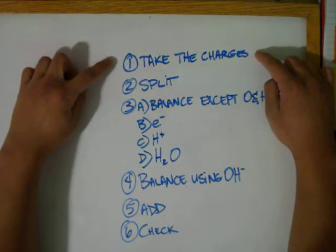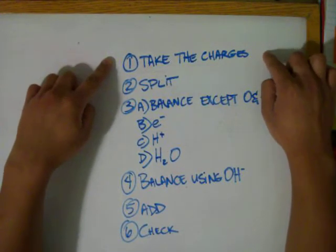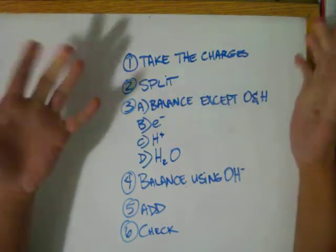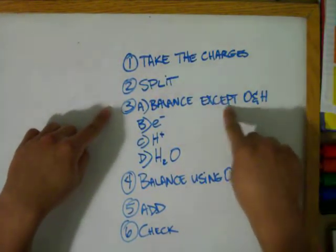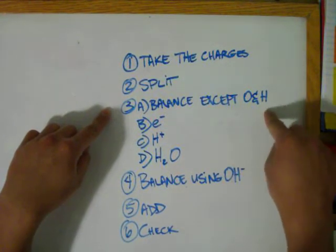First, you take the charges of the elements except for hydrogen and oxygen, then you split the reaction into half reactions, and then you balance the elements except for hydrogen and oxygen.